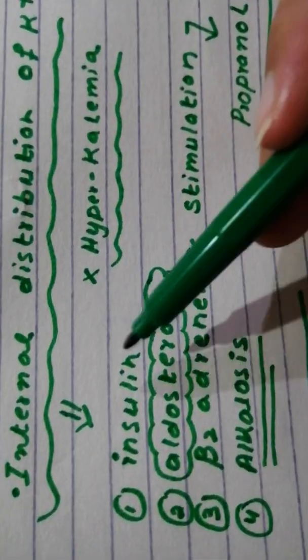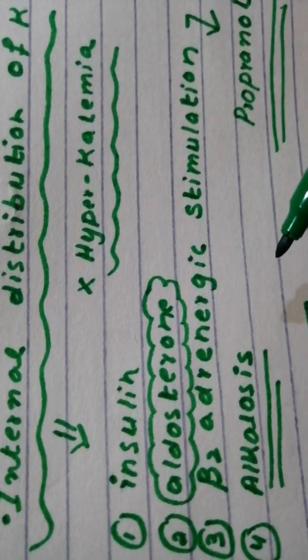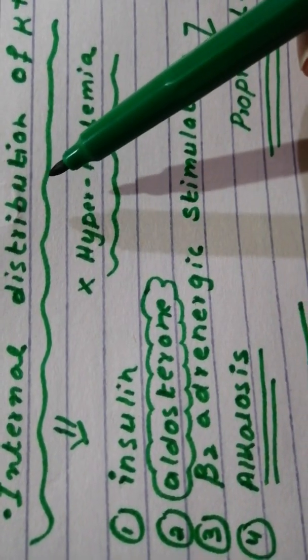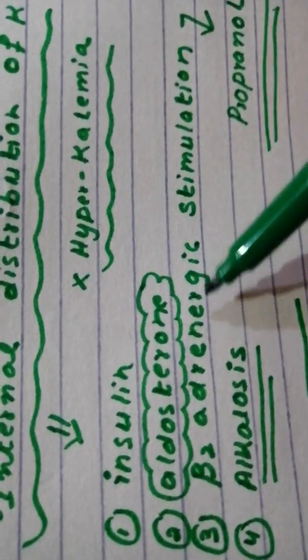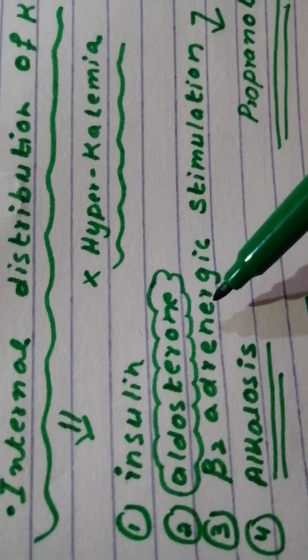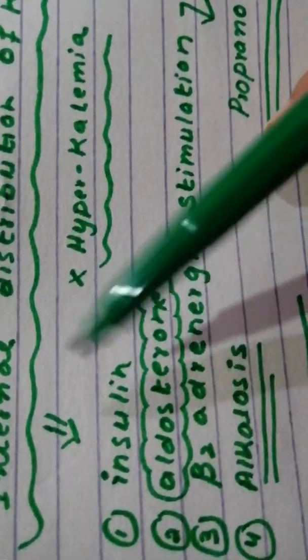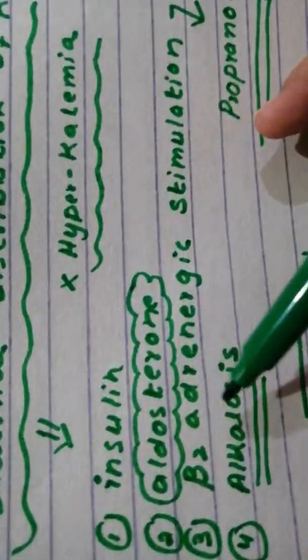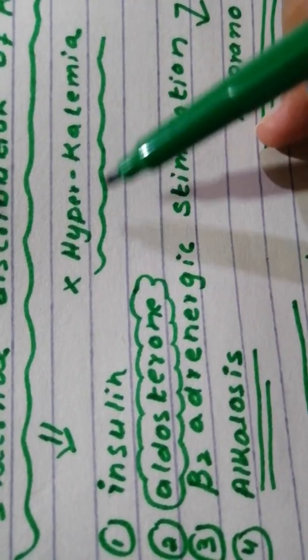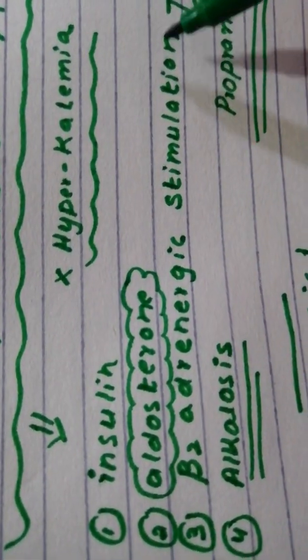We have considered various situations in which internal distribution is affected negatively. Normally, these conditions - insulin, aldosterone, beta-2 adrenergic stimulation, alkalosis - are promoting the immediate and precise redistribution of potassium between ECF and ICF compartments following a meal rich in potassium. Diabetes, Addison's, beta blockers, and acidosis would mess with that.